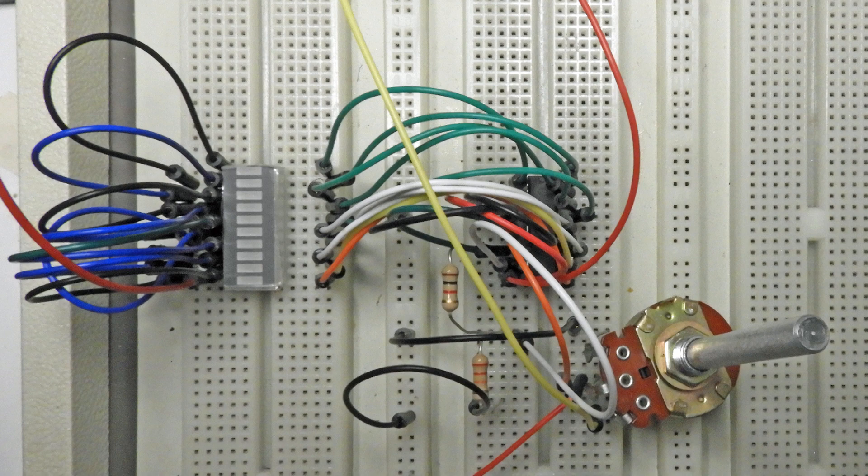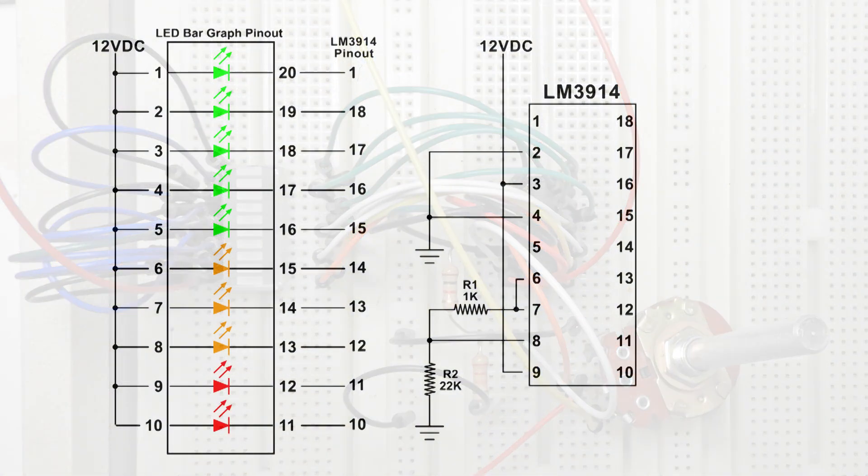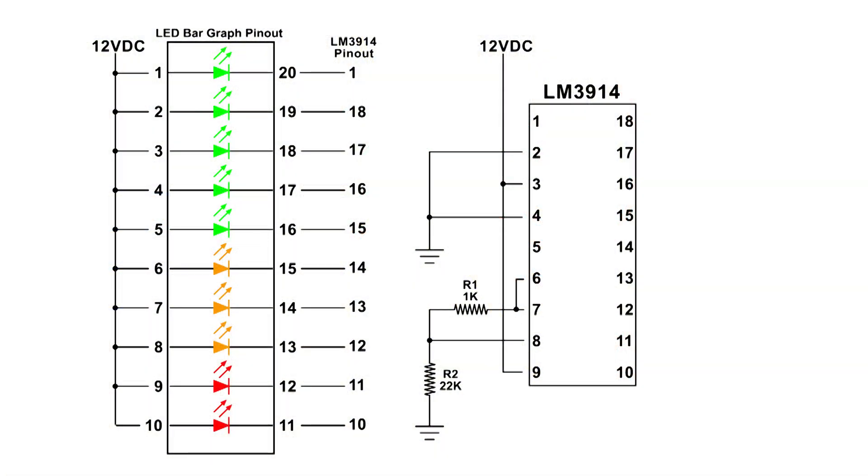But this was not my first setup. It was like this. I had everything wired but I didn't have a variable resistor. And on pin 5 I just had a wire and it acts like an antenna. And here is the video on that.